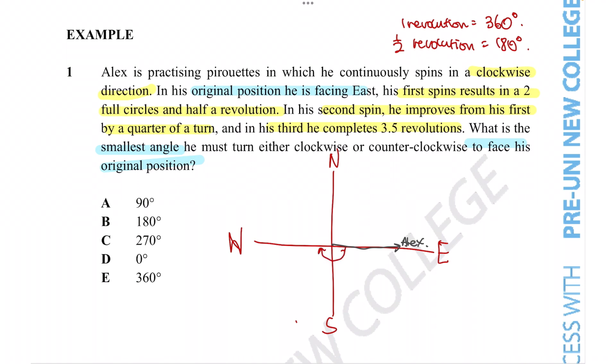Now for the second spin, we are told he improves from his first by a quarter of a turn. So he has spun two times and then another half time. However, after that, he also improves by a quarter of a turn. This is the first step, and the second step actually has him facing south.